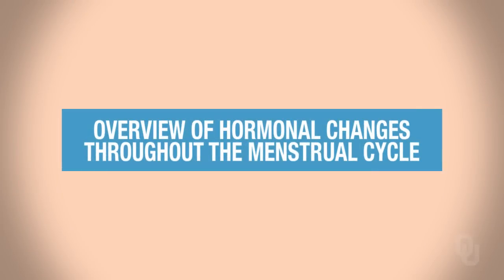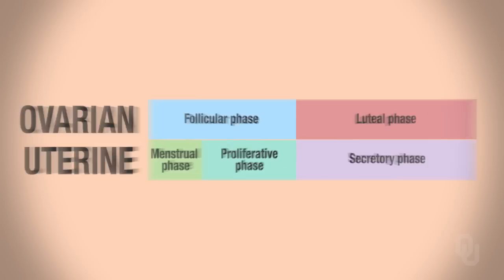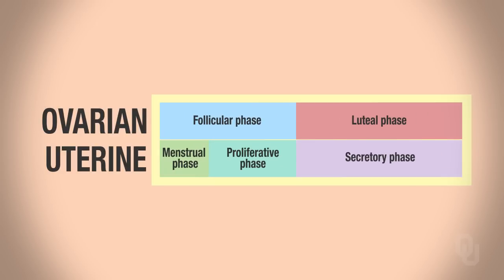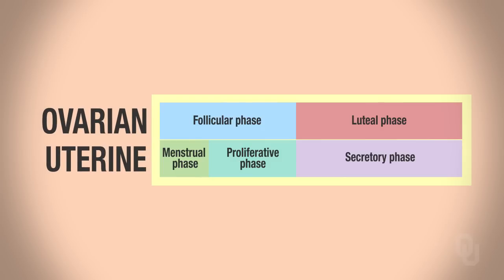Let's start taking a look at the hormonal changes that are occurring. These are hormonal changes throughout the menstrual cycle, so we're going to be talking about the ovarian and the uterine cycles.